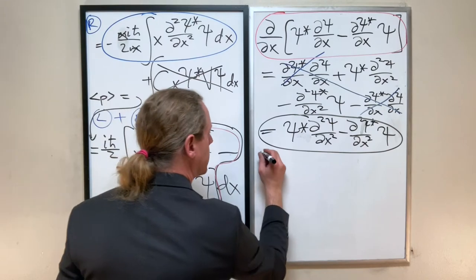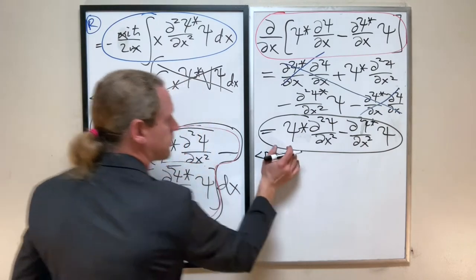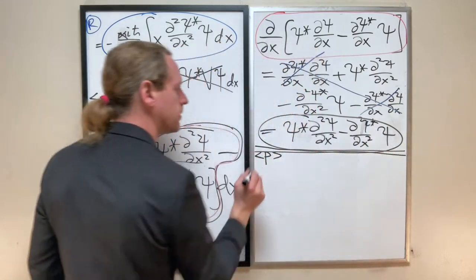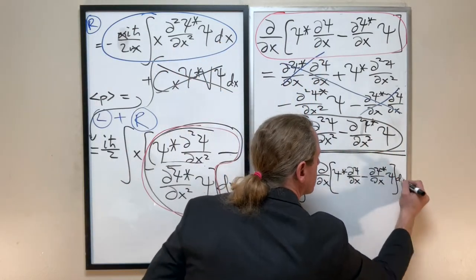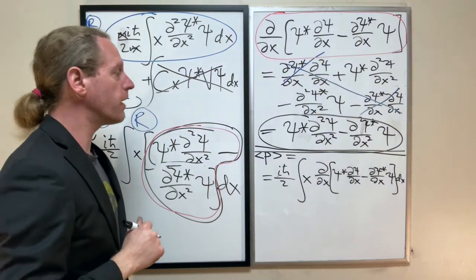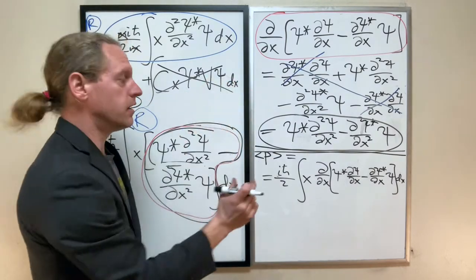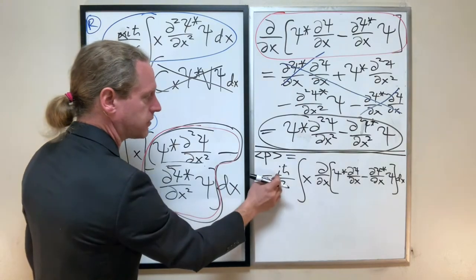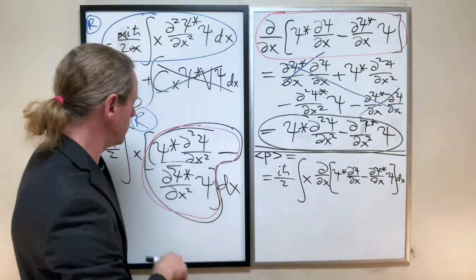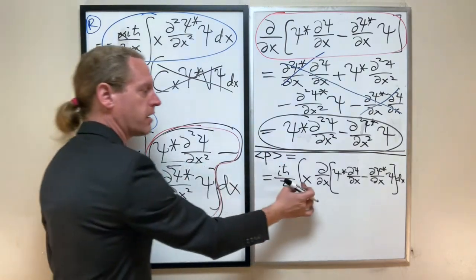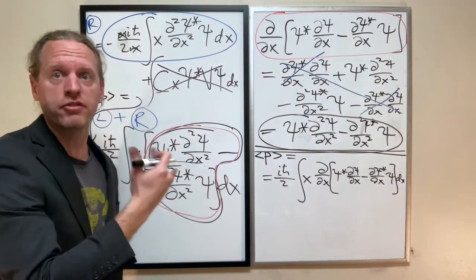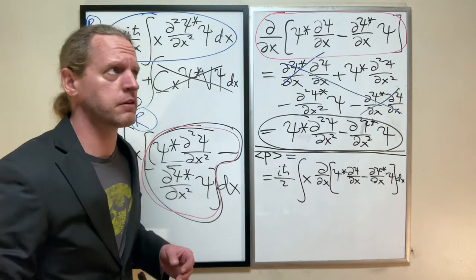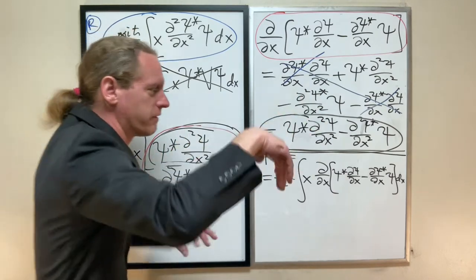So remember, the left hand side is still the expected value of momentum. So I believe that should be correct. Again, the expected value of momentum. We have a constant there, the m's have gone out. We've kept our x there, and that came from originally the expectation value of x that we had taken the derivative of.